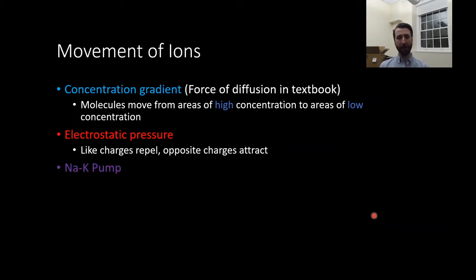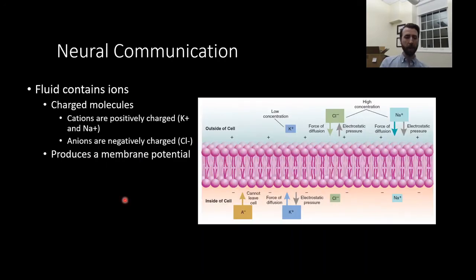The sodium-potassium pump is a form of active transport. This uses energy, ATP, to pump three sodium ions out of the cell and two potassium ions into the cell.